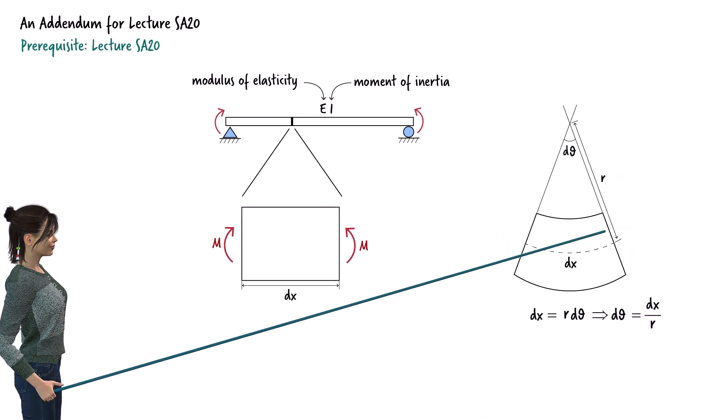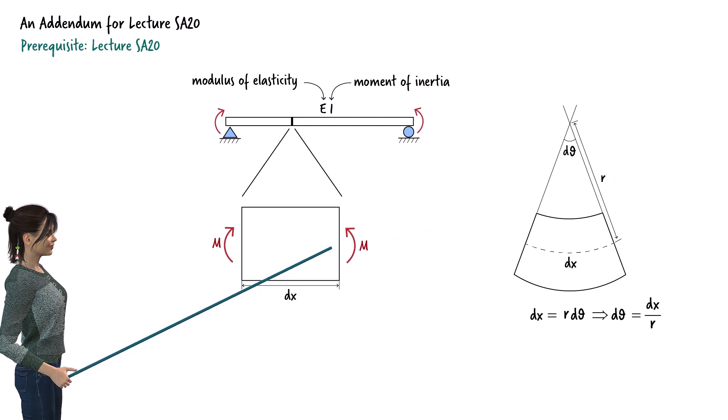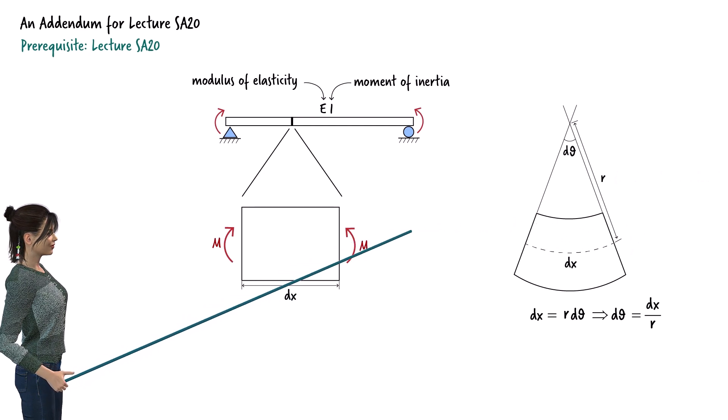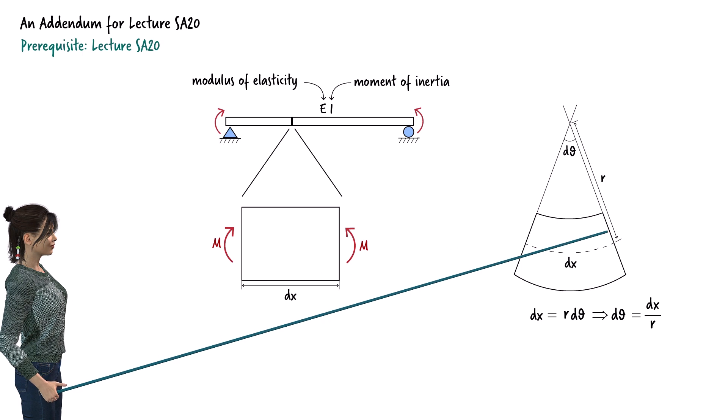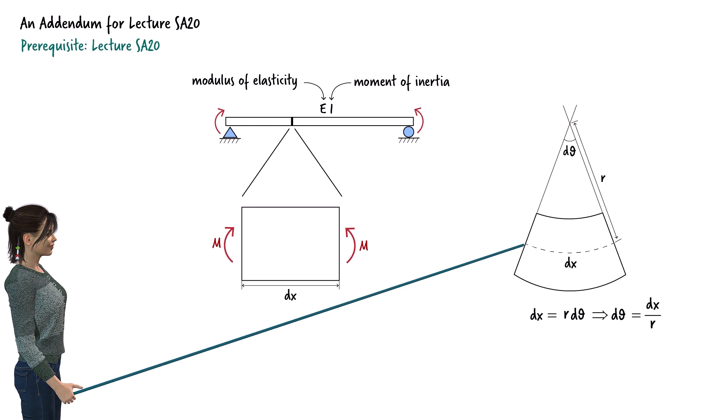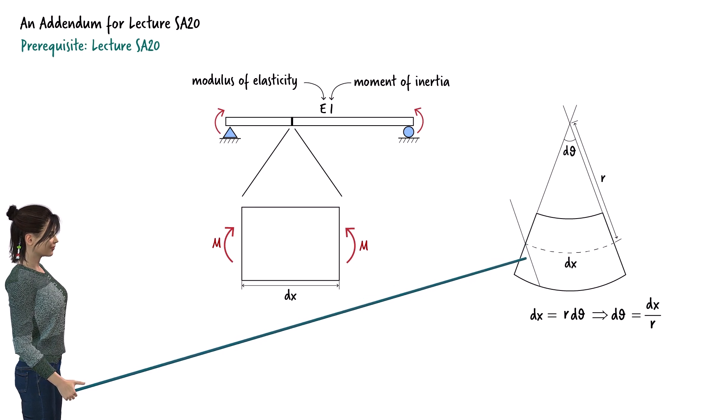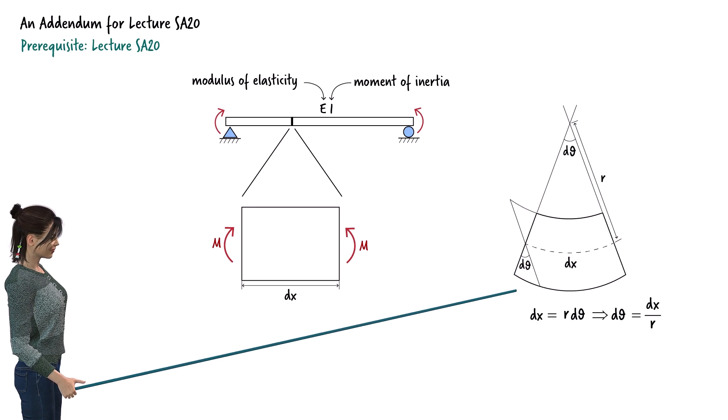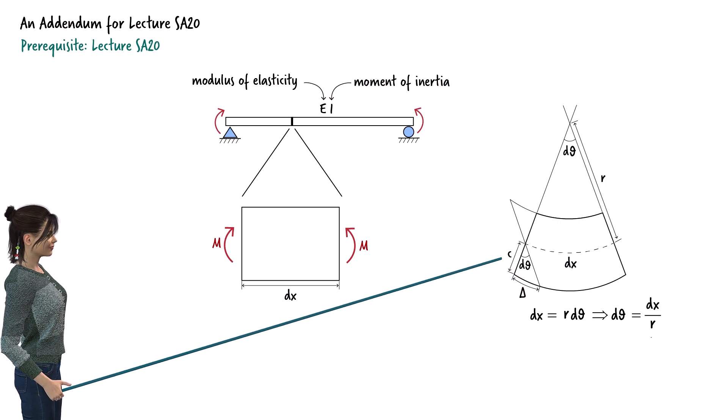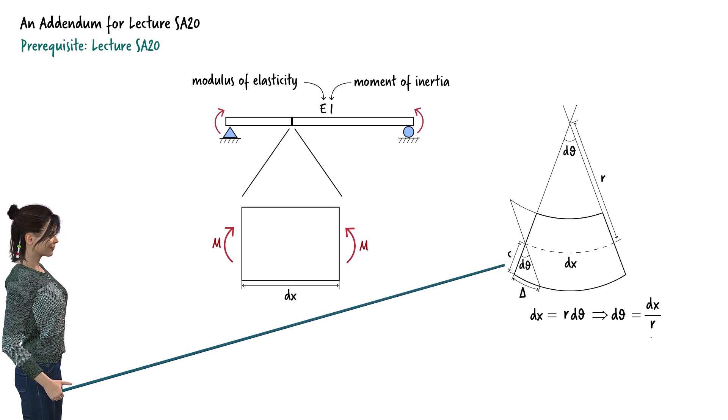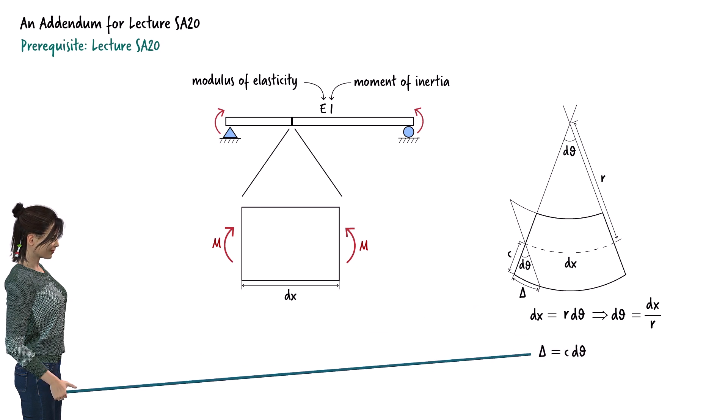This line represents the right edge of the beam's segment, this edge. Obviously, the line here has a bit of rotation because of the beam's deflection. If we redraw that line here, like this, we can see that this angle equals dθ. Let's refer to this arc length as delta and denote this distance as c. Then, we can write delta equals c times dθ.